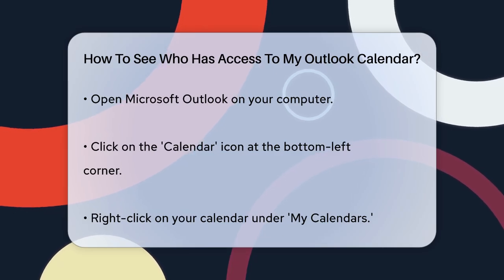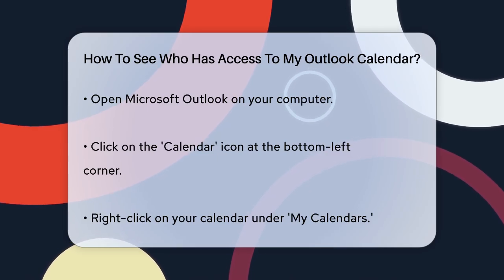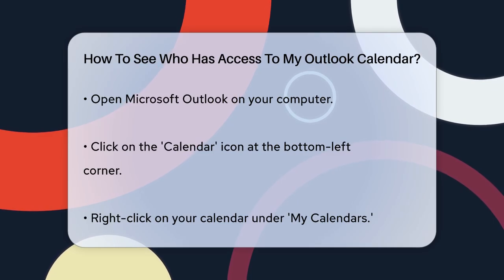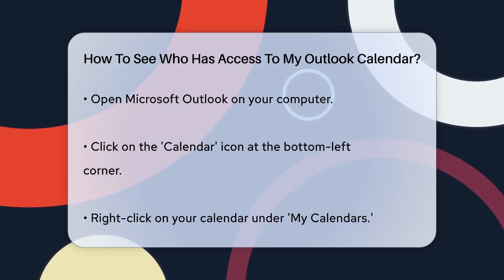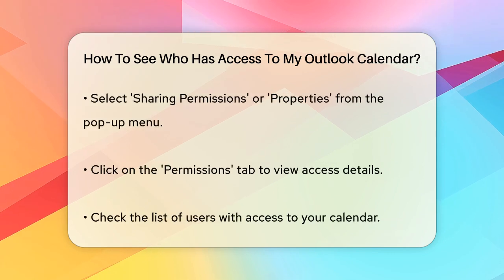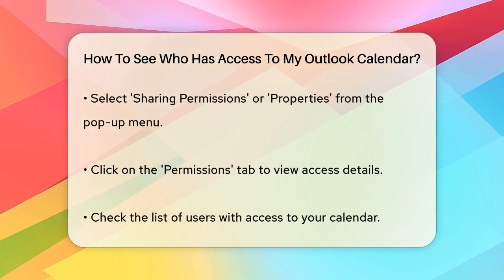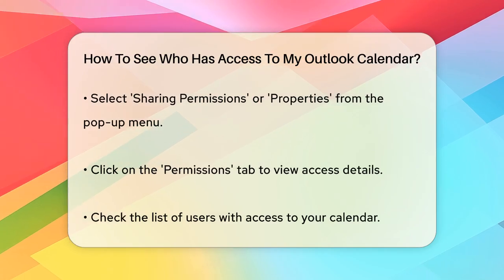First, open Microsoft Outlook on your computer. Click on the calendar icon, usually located at the bottom left corner of the Outlook window. Next, right-click on your calendar under the My Calendars section. From the pop-up menu, select Sharing Permissions or Properties and then click on the Permissions tab.